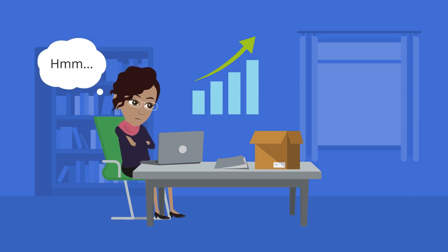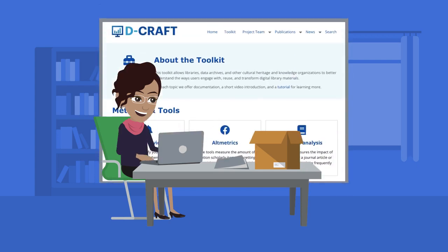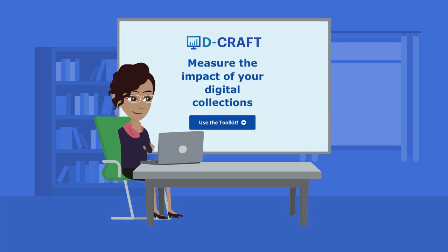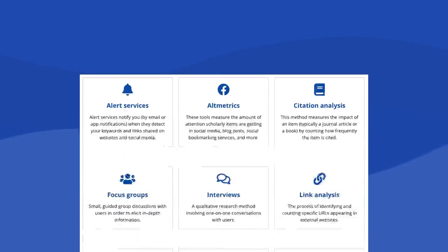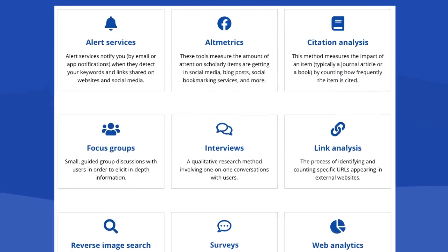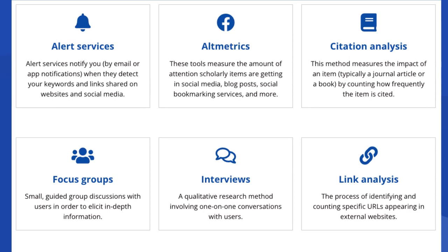She needed to gather as much evidence of the impact of this collection as possible, but how could she do that? Mia was in luck because she found D-Craft. D-Craft is a toolkit developed to help digital library practitioners gather evidence of the impact of their collections. D-Craft connected her to a variety of methods and tools that she could use to measure use and reuse of images from their photo collection.